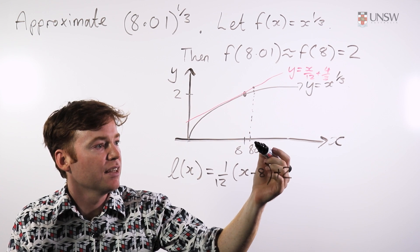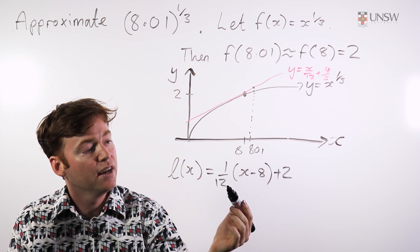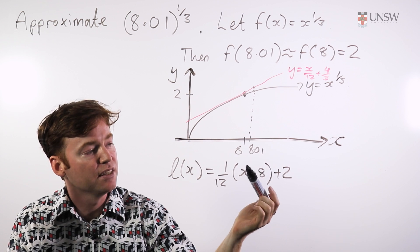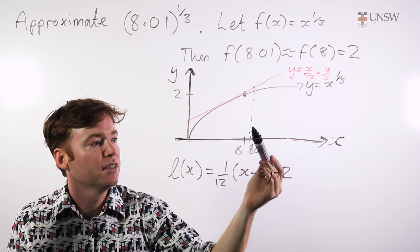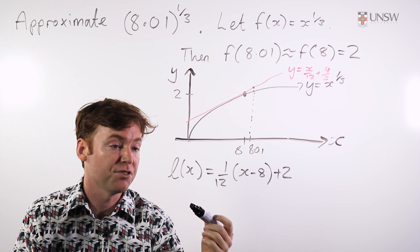From the graph we can see that the tangent and the function are very close. And while I can't explicitly evaluate the function f of x at 8.01, I can do so to the tangent.